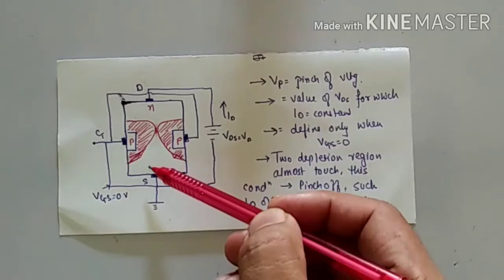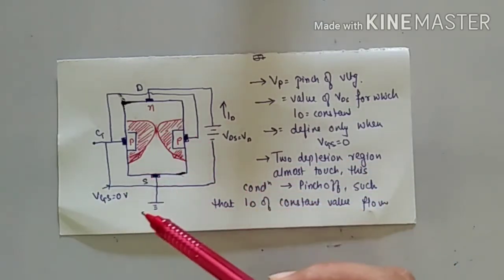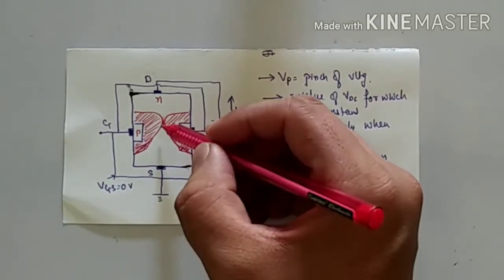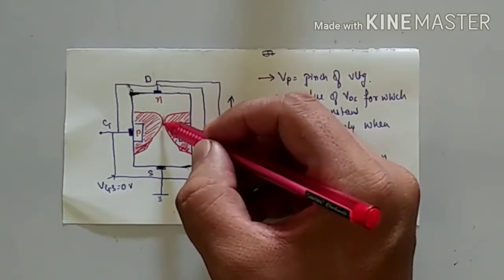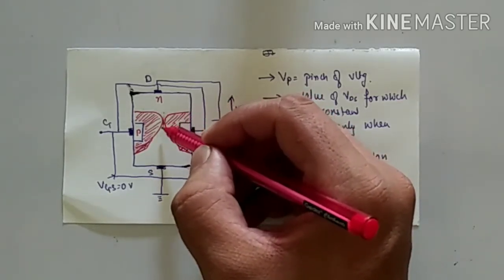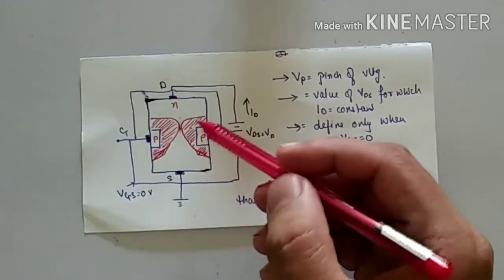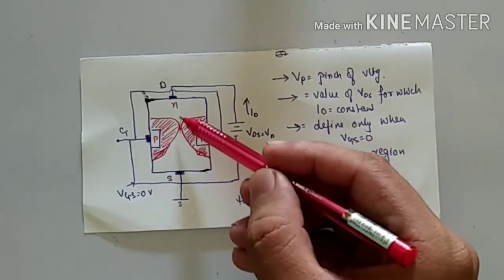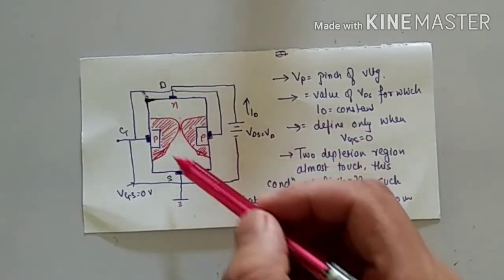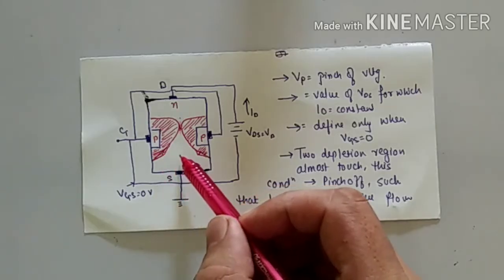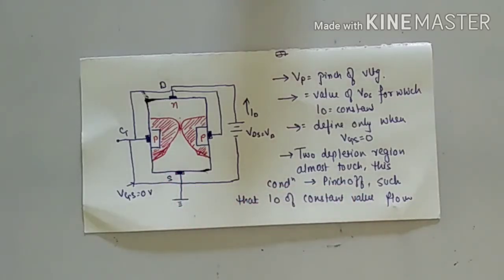As the voltage goes down, the depletion region decreases. Here it is 10V, and when 10V is passing through this narrow part — this part is not touching but is a narrow part — so at 10V the width of the depletion will be high. As the voltage decreases going from 10, 9, 8, 7, 6 — this is known as a voltage drop — the voltage decreases and the depletion region decreases accordingly.